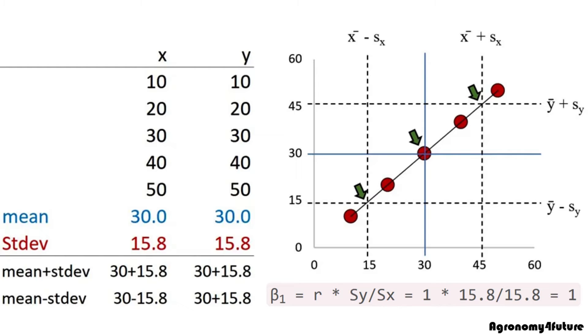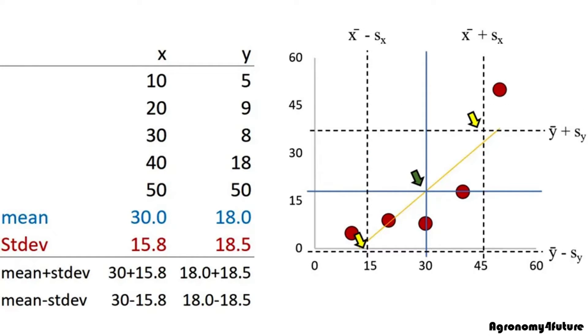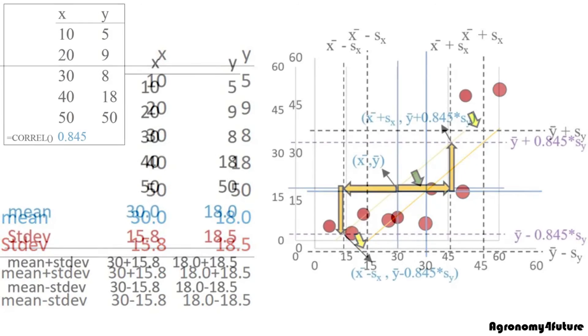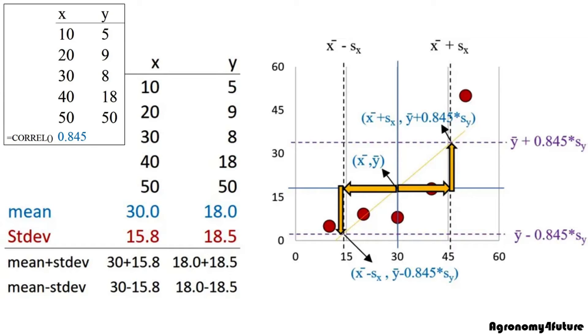Here is another case. Now, x and y is not the same. As the same way, let's draw lines. Please look at the yellow arrow. When x and y is the same which means correlation is 1, the trend line goes through between mean of x plus minus standard deviation and mean of y plus minus standard deviation. However, when y is different from x, the trend line will go through between mean of x and y plus minus standard deviation multiplying correlation. In here, standard deviation was modified by 0.845 times in standard deviation of y.